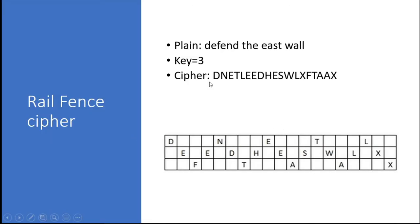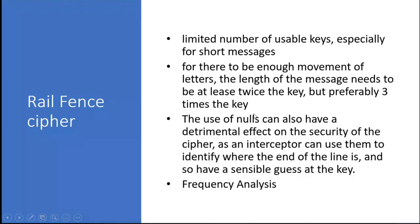You can see the same thing here. Instead of two fences or two lines, here we have three lines and the same text is written diagonally up and down in a zigzag way. When reading the cipher, it is reading line by line. So D-N-E-T-L you can see here in the cipher, then L-E-E-D, and so on, it is writing like this. This is a bit more complex than the previous one, and the key size here is three.